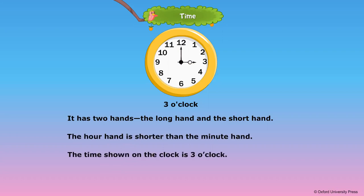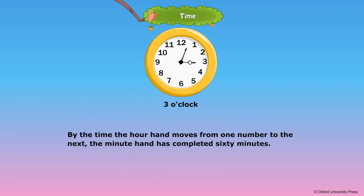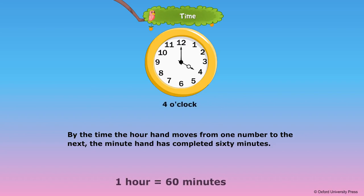The time shown on the clock is 3 o'clock. By the time the hour hand moves from one number to the next, the minute hand has completed 60 minutes. 1 hour is equal to 60 minutes.